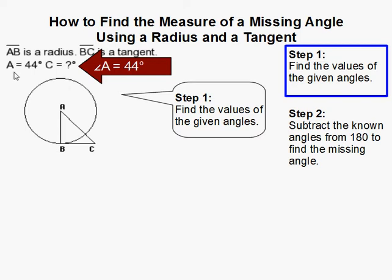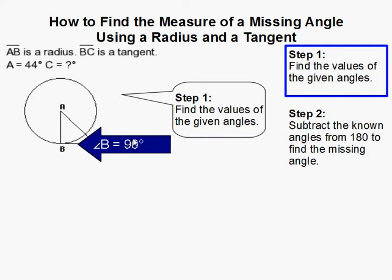We're given that angle A is 44 degrees, that's right here. We're also told that AB is a radius and BC is a tangent.